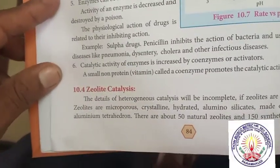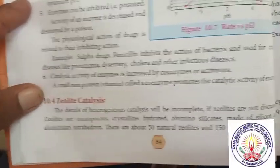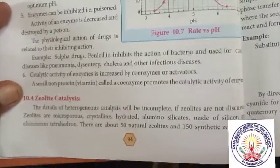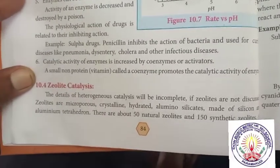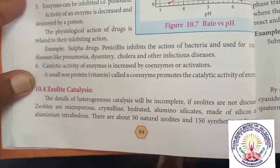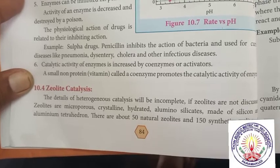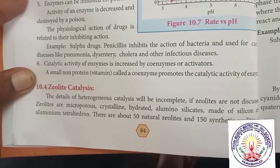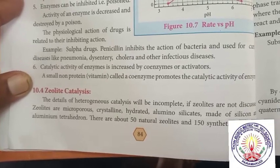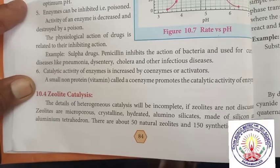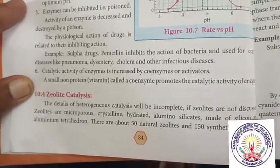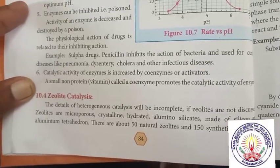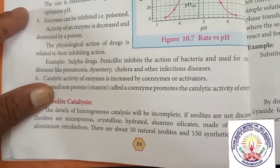The details of heterogeneous catalysis will be incomplete if zeolites are not discussed. Zeolites are microporous, crystalline, hydrated aluminosilicates made up of silicon and aluminium tetrahedra. There are about 15 natural zeolites and 150 synthetic zeolites.